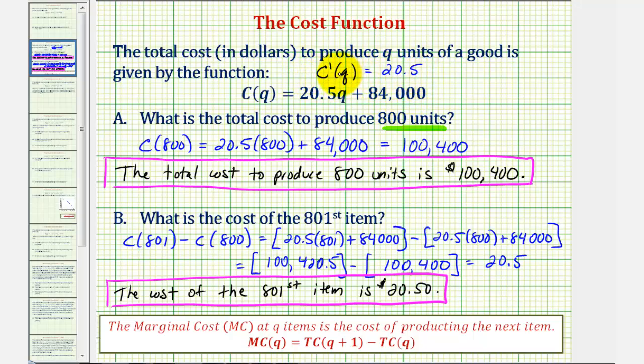So notice for any value of Q, the marginal cost, or the cost of the next item, would just be 20.5, or $20.50.